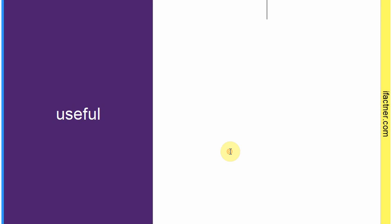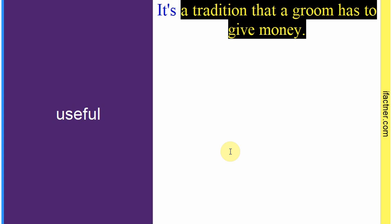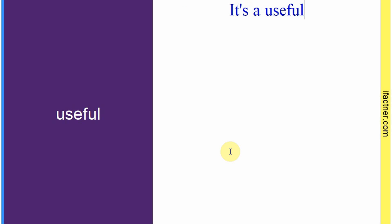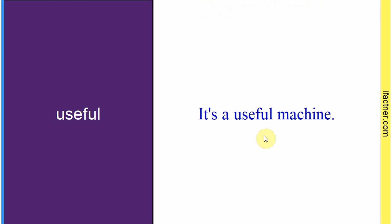Word hai: 'useful'. Sentence banaate hain: 'It's a useful machine.' Yeh ek istamal hone waali machine hai jis ka kaafi istamal kiya ja sakta hai. Toh 'useful' hoti hai jo karamad cheez ho, jis ko istamal kiya ja sakta ho. Sentence banaaya: 'It's a useful machine.'